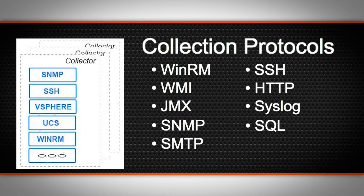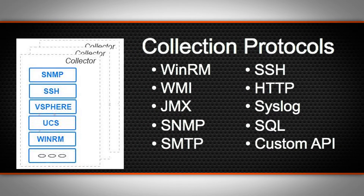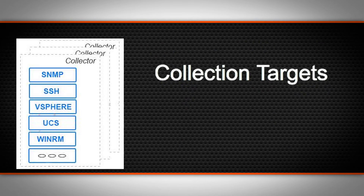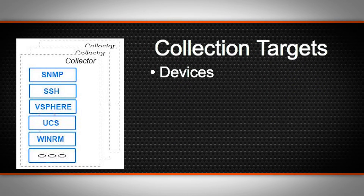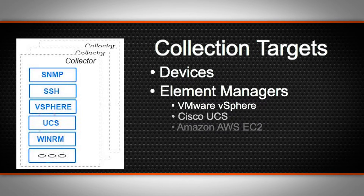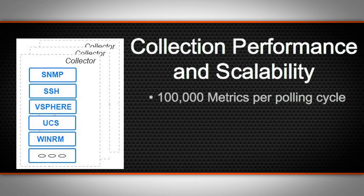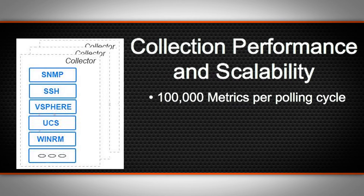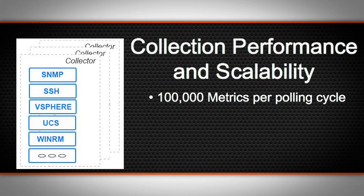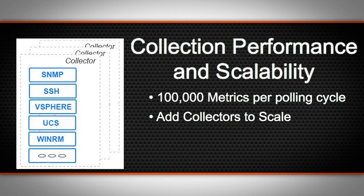Collectors can be customized to leverage data from proprietary or custom APIs. They can collect event data directly from a device or through an element manager like VMware vSphere or Cisco UCS Manager. Each collector can support monitoring up to 100,000 data points per polling cycle. As more devices and data points are added, additional collectors may be deployed to meet the monitoring demands.